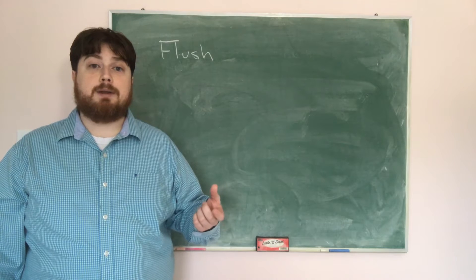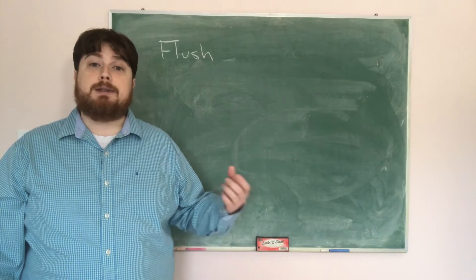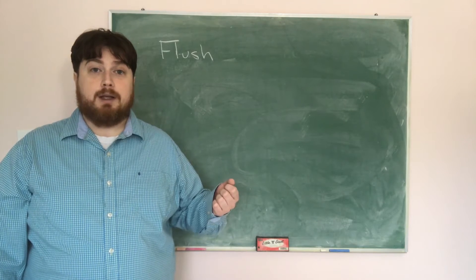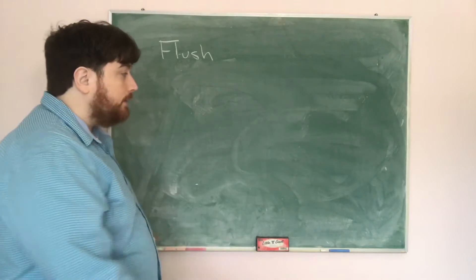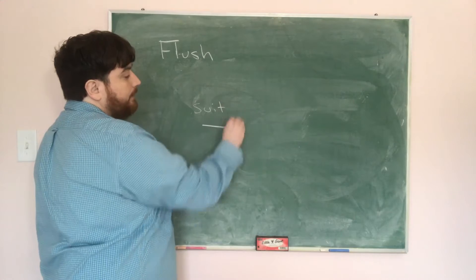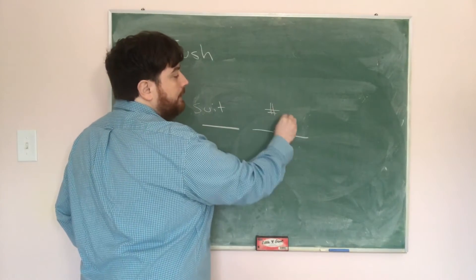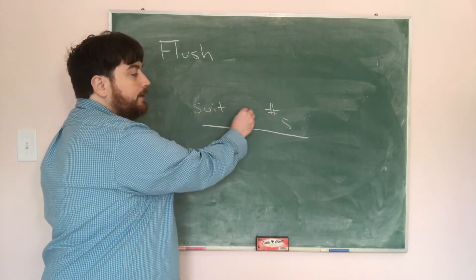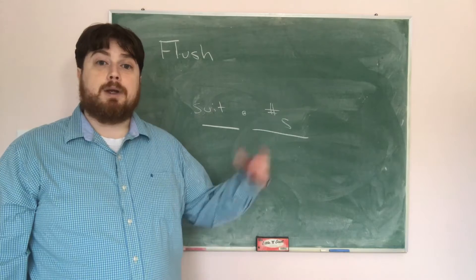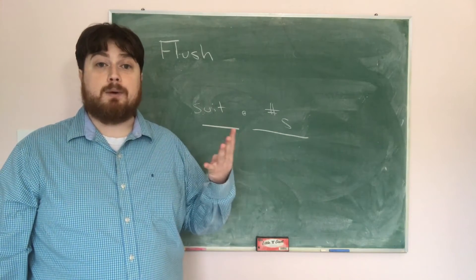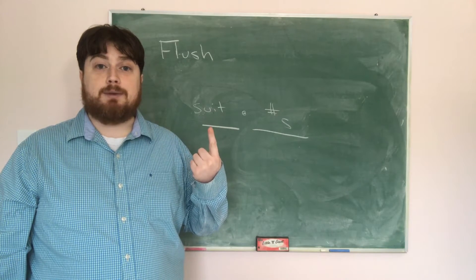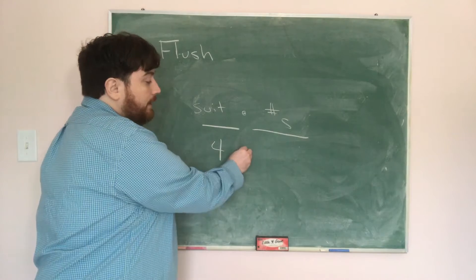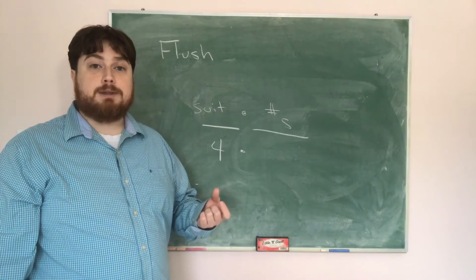To count flushes, we make two choices and multiply them together. First, we choose the suit: since all cards must be the same suit, there are four suits to choose from, giving us 4 choose 1, which is 4. Once I've picked a suit, all my cards must be that suit.